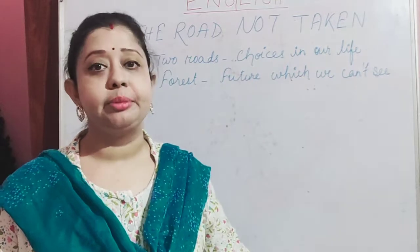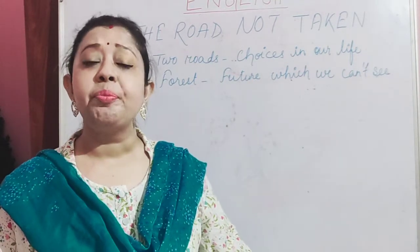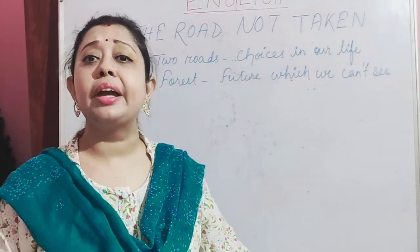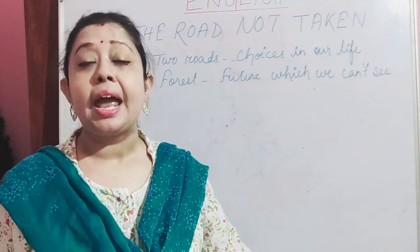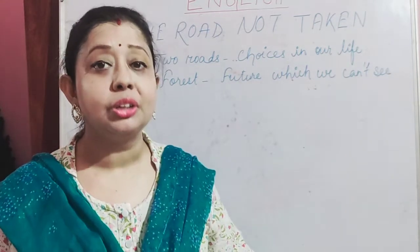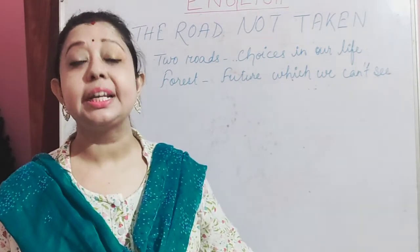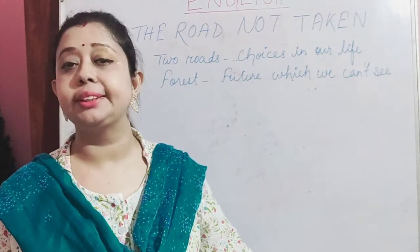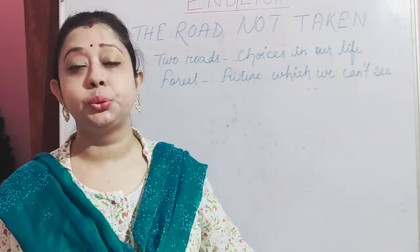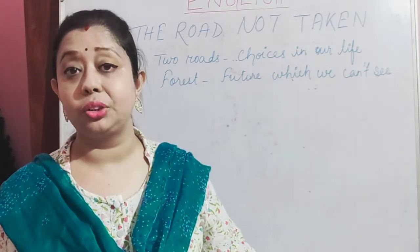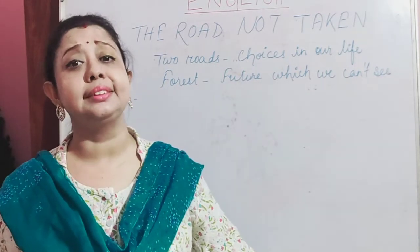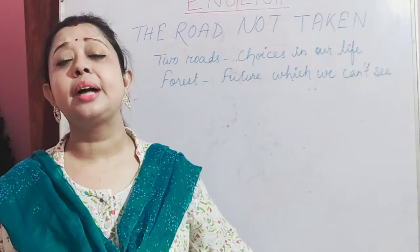In this poem, the two roads that the poet talks about are the choices that come into our life. At times we come to a point where we come across various choices and we have to make a decision. So this is what the poet actually talks about — it's not literally about two roads. These two roads are actually the kinds of choices that one comes across.